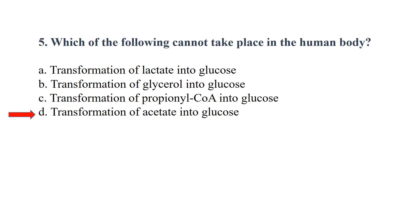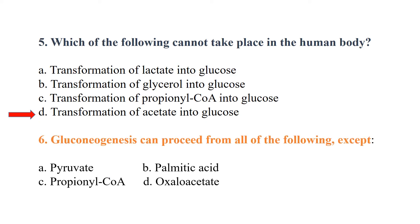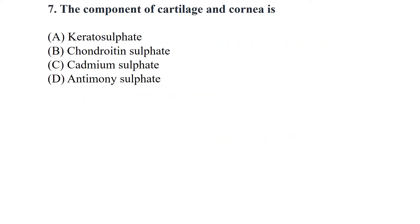Gluconeogenesis can proceed from all of the following except palmitic acid — palmitic acid cannot be involved in gluconeogenesis. The component of cartilage and cornea is keratosulphate.